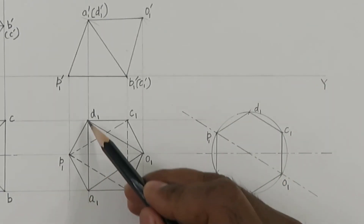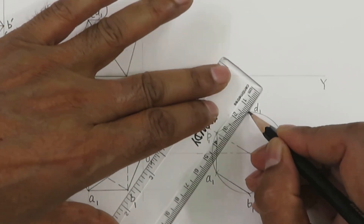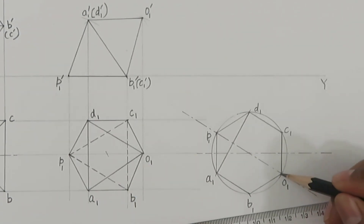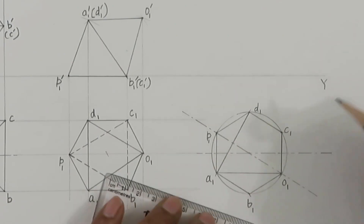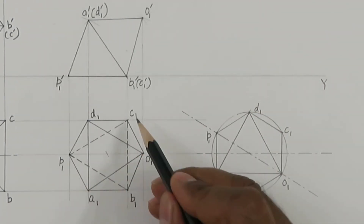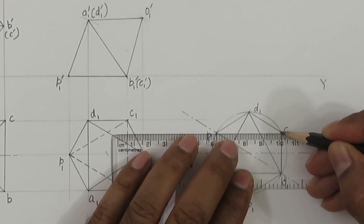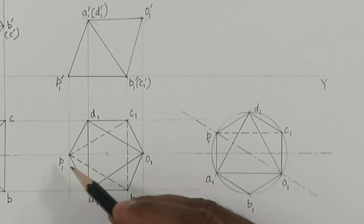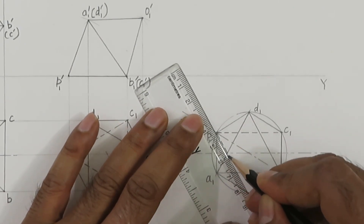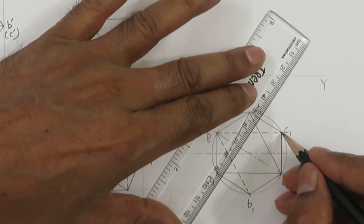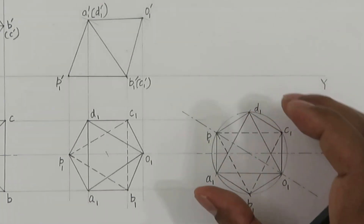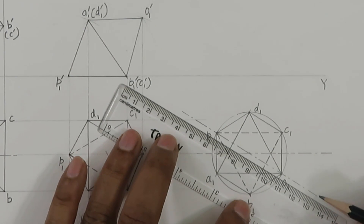Here we can see that A1D1 is also visible, and A1O1 is also visible — we are following all the edges — and same is for D1O1. P1C1 is not visible, so it is a dotted line. Similarly, P1B1 is not visible, so we have a dotted line, and same for D1C1. So now what we have got is the top view, but this top view has been rotated by 30 degrees. You can also show the angle here.